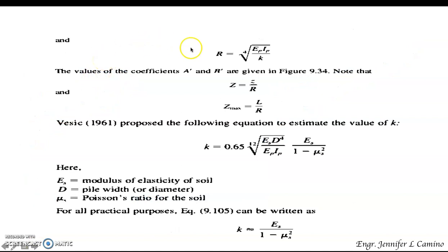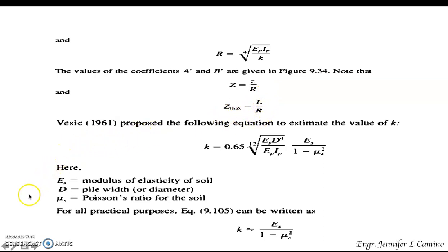Our r is equal to the fourth root of (E_t × I_t) over small k, where a-prime and r-prime are given in the figure. Note that capital Z equals z over capital R, and Z_sub_max equals L over R, so you can get the values for a_b, b_x, a_x, a_m, and b_m.